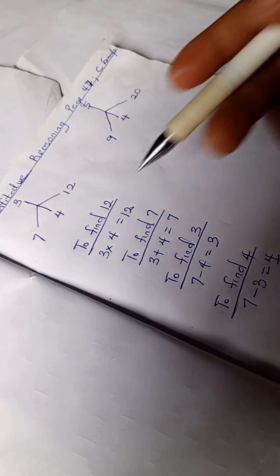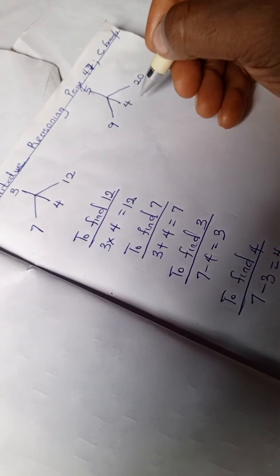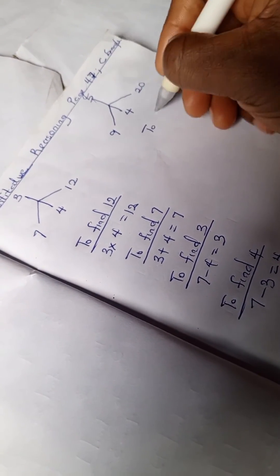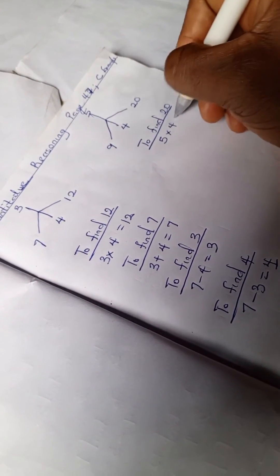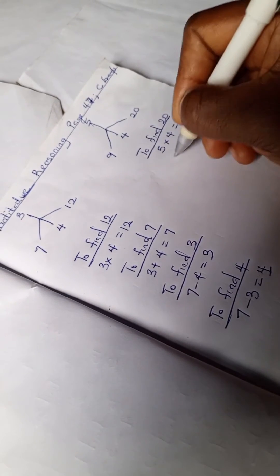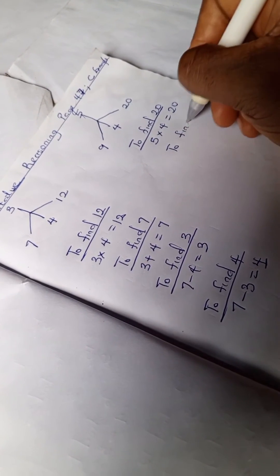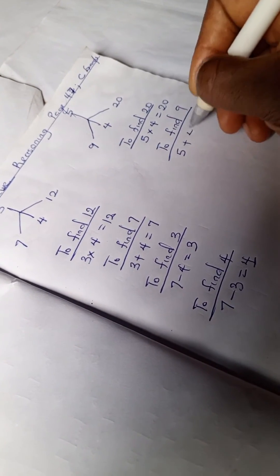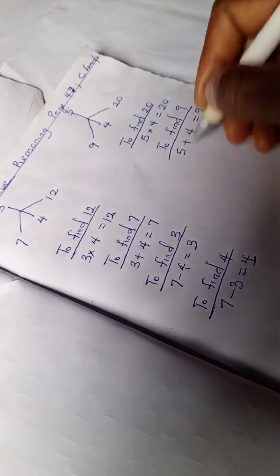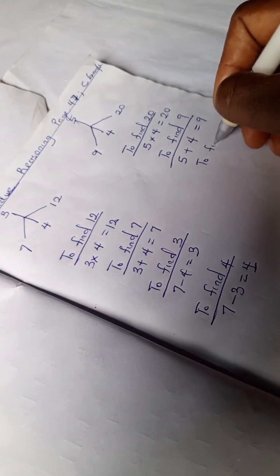We can do the same thing for this. To find 20 we have 5 times 4 is 20, and to find 9 we have 5 plus 4 is 9.